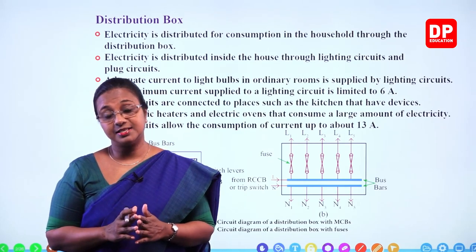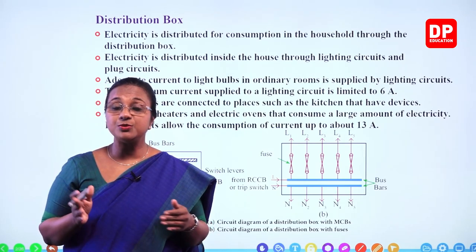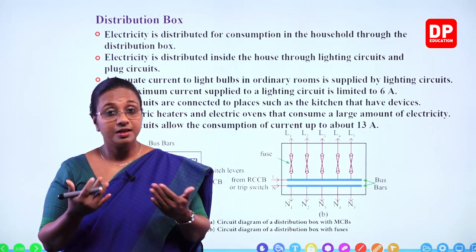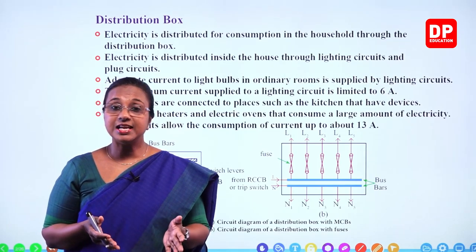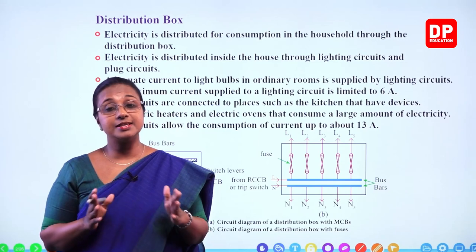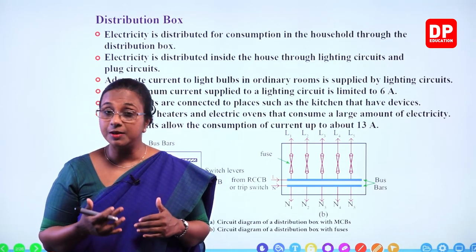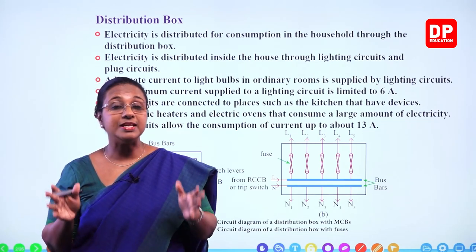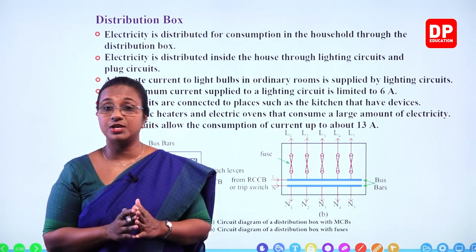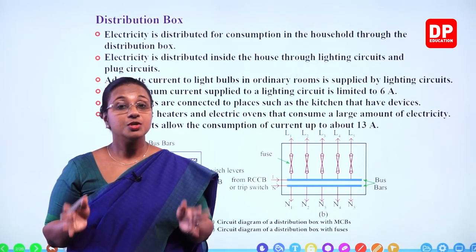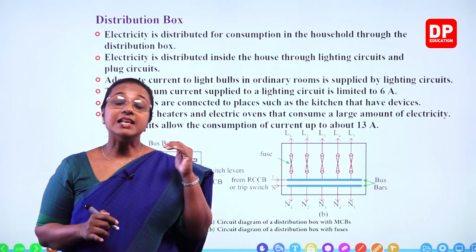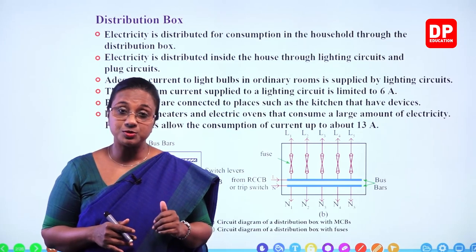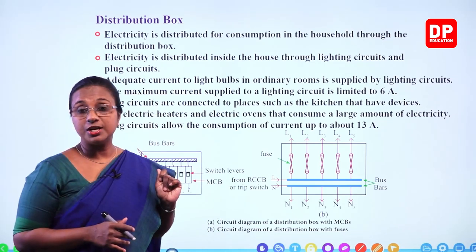Thereafter we have the isolator. The isolator is the main switch with the main fuse. From the isolator, all the components belong to the consumer. So: isolator, then we have the residual current circuit breaker — the RCCB or the trip switch. The trip switch is a dual pole switch, which means it can disconnect both the live and neutral wires together. The power supply — the live wire — from the RCCB is given to the distribution box.